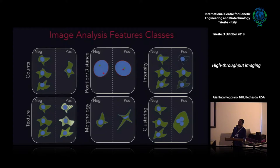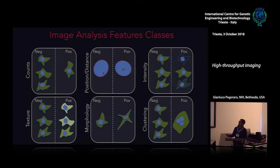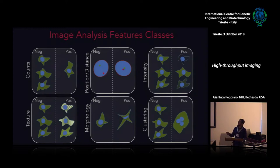The simplest class is counts — we can count nuclei as a proxy for the number of cells in a well, and also count objects such as spots in the nucleus, cytoplasm, or other subcellular compartments. Since we're using microscopy, we can also measure the position or distance of subcellular objects, either between themselves or relative to other cellular hallmarks such as the nuclear envelope.